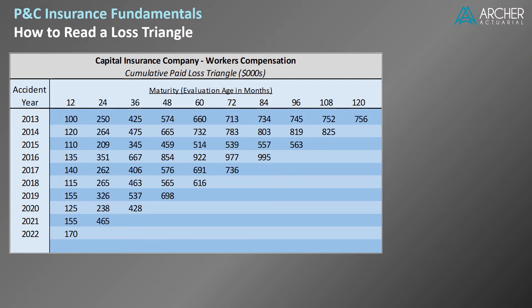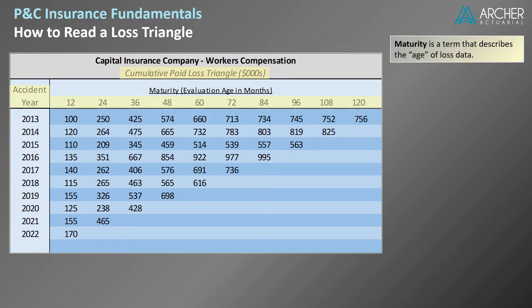In this example we have a cumulative paid loss triangle for workers' compensation coverage for a sample insurance company. This triangle presents paid losses on an accident year basis with maturities at year-end evaluations. Maturity is a term that describes the age of loss data.